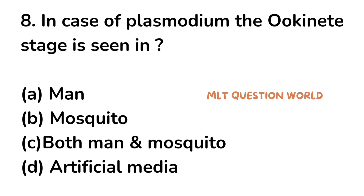Question number 8. In case of Plasmodium, the eukinete stage is seen in: option A. Man, option B. Mosquito, option C. Both man and mosquito, option D. Artificial media. The right answer is option B, Mosquito. The eukinete stage is seen in the mosquito.